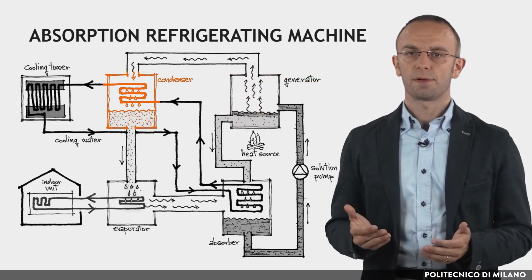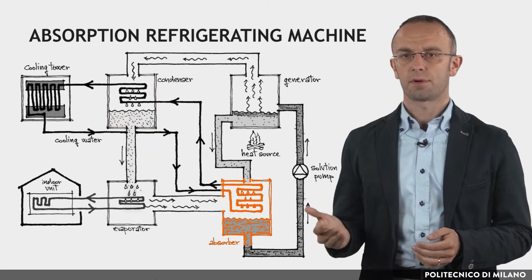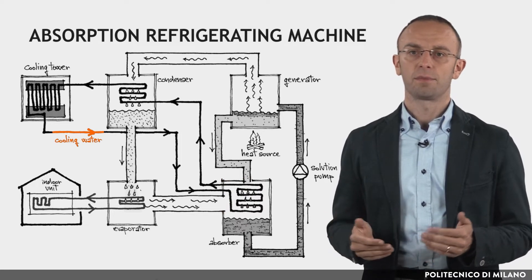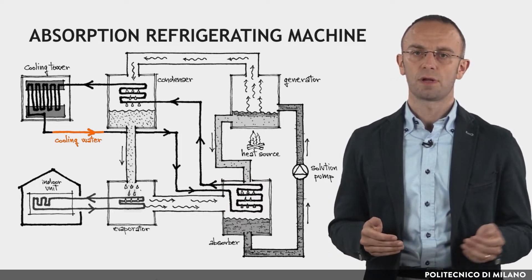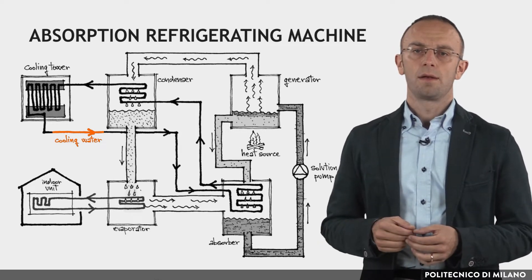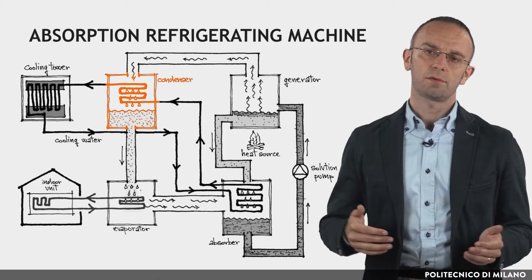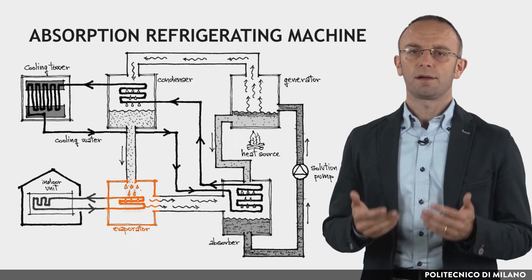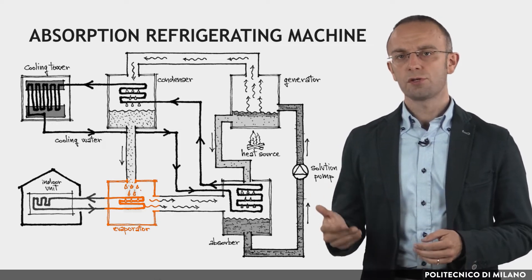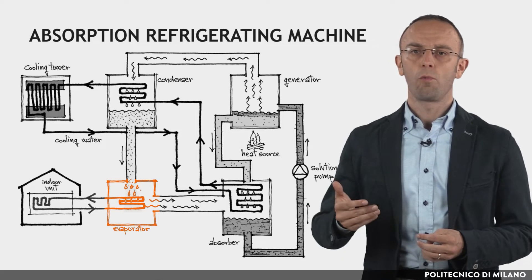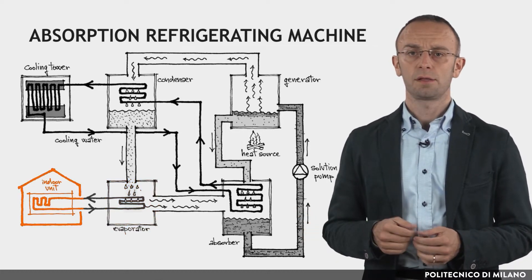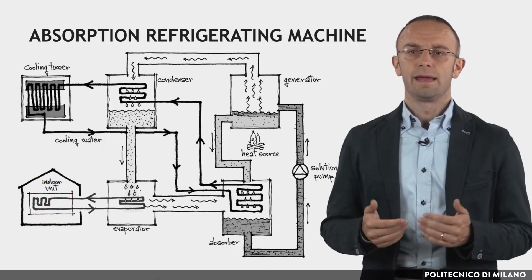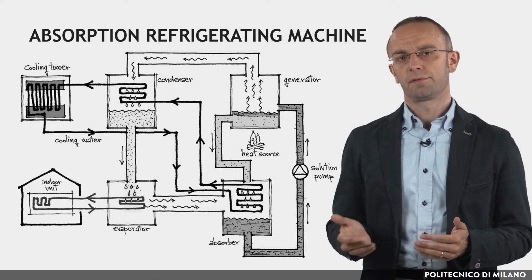The remaining concentrated part of the solution flows down into the absorber chamber. In the condenser, the cooling water absorbs the condensation heat from the vaporized part of the solution, changing it into a liquid. The liquid refrigerant flows from the condenser to the evaporator, experiences a drop in pressure and temperature, and is sprayed on a heat exchanger through which the water to be chilled flows before reaching the indoor unit. The efficiency of the absorption machine is dependent on the temperature of the heat source — the higher the temperature, the higher the efficiency.